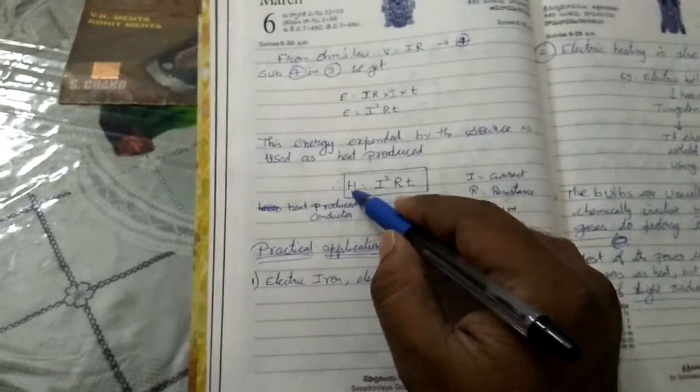This energy is expended by the source and this used as heat energy. So we can replace energy with heat. I equal to H equal to I square R T. Where I is current, R is resistance, T is time taken.